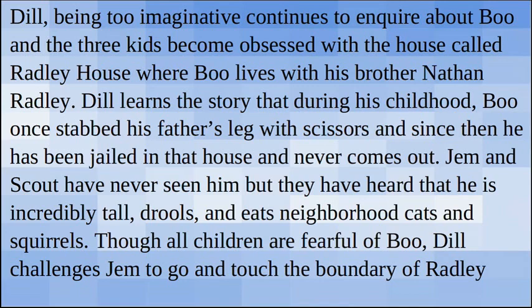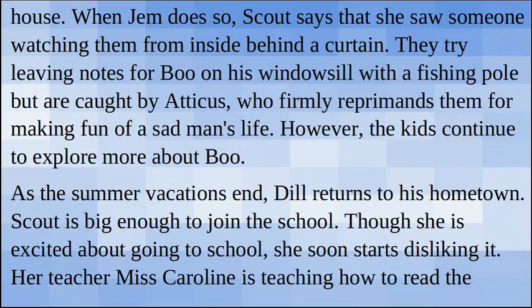Dill learns the story that during his childhood, Boo once stabbed his father's leg with scissors and since then he has been jailed in that house and never comes out. Jem and Scout have never seen him but they have heard that he is incredibly tall, drools and eats neighborhood cats and squirrels. Though all children are fearful of Boo, Dill challenges Jem to go and touch the boundary of Radley House. When Jem does so, Scout says she saw someone watching them from inside behind a curtain. They try leaving notes for Boo on his window using a fishing pole but are caught by Atticus, who firmly reprimands them for making fun of a sad man's life.